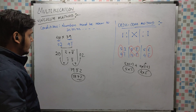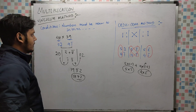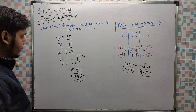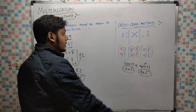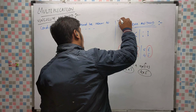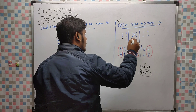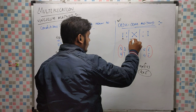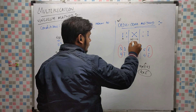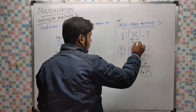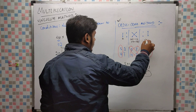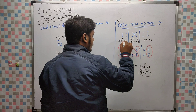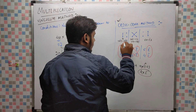The answer is 1872. This is the answer — 1872. In this method, the steps are: tens to tens, tens to units, units to tens, and then units to units. That is the sequence to follow.